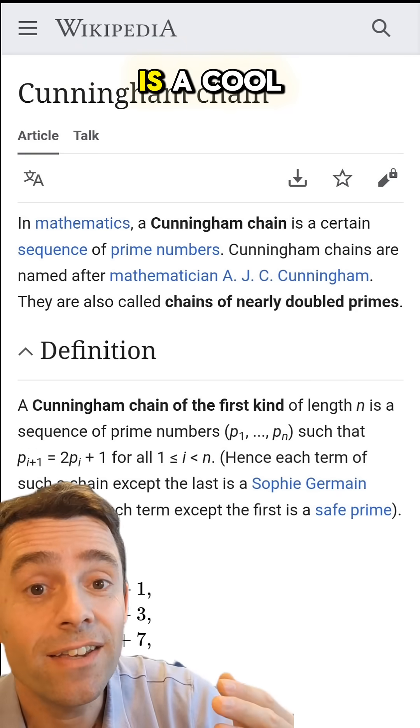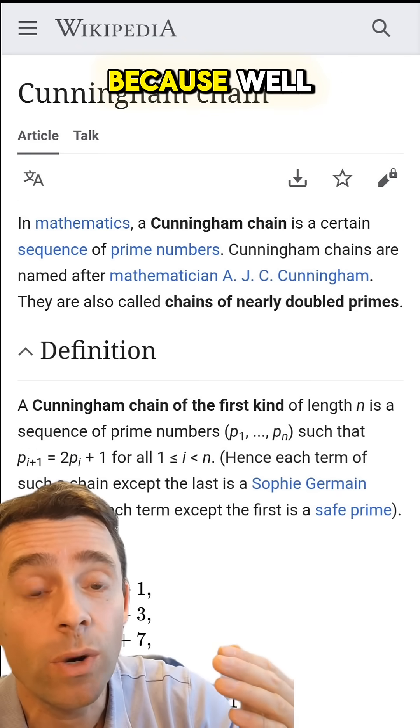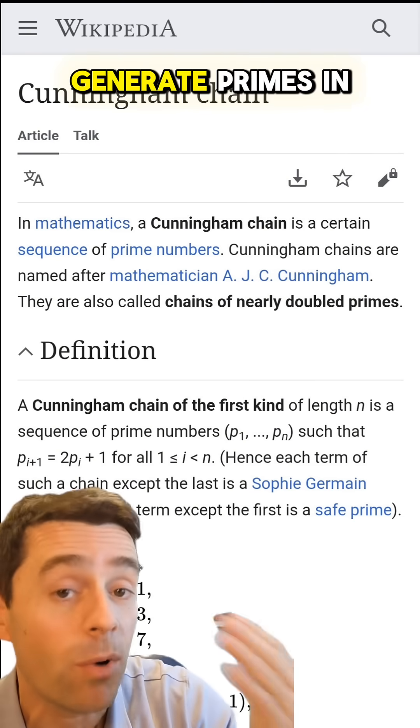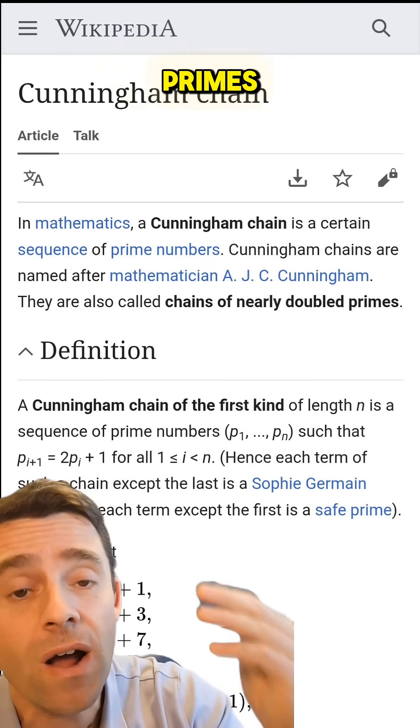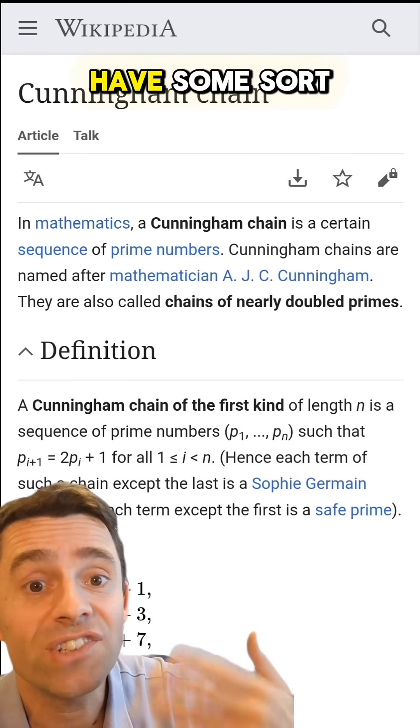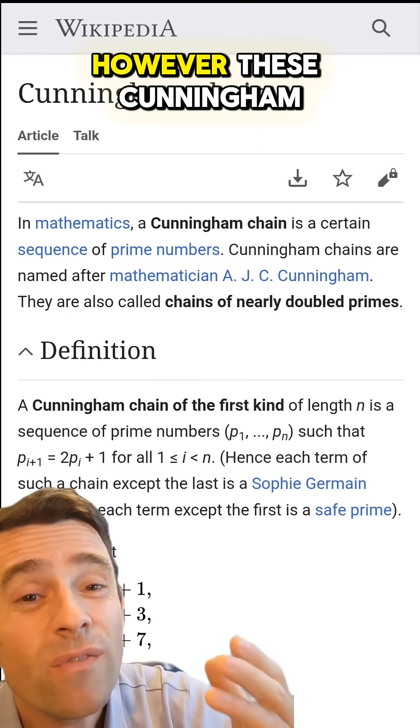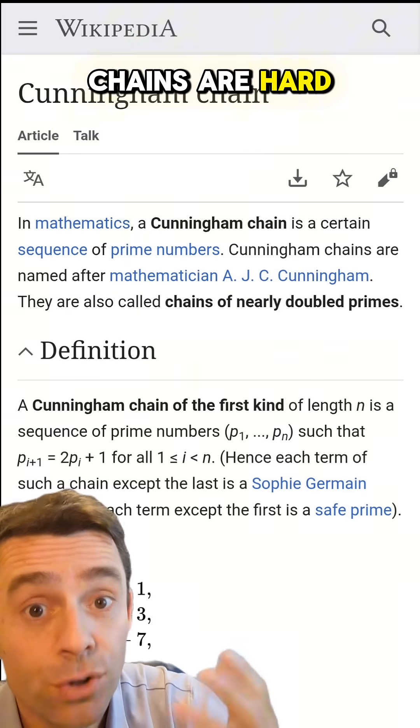Cunningham chains are a cool thing to study because we want to be able to generate primes in some way, and if we could find such chains that generate primes, then we would be able to have some sort of prime generator. However, these Cunningham chains are hard to find.